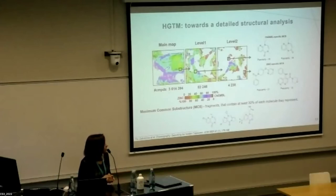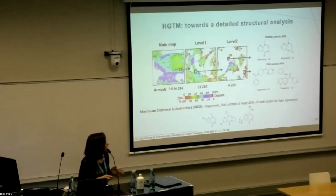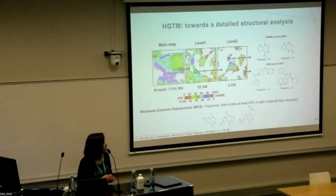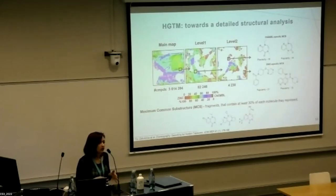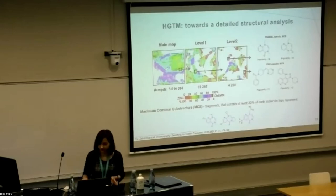On the last levels of zooming, you can perform structural analysis — for example maximum common substructure — to detect compounds specific to one library. For ChEMBL, those would be compounds not present on the market; for ZINC, molecules not yet reported to be tested.